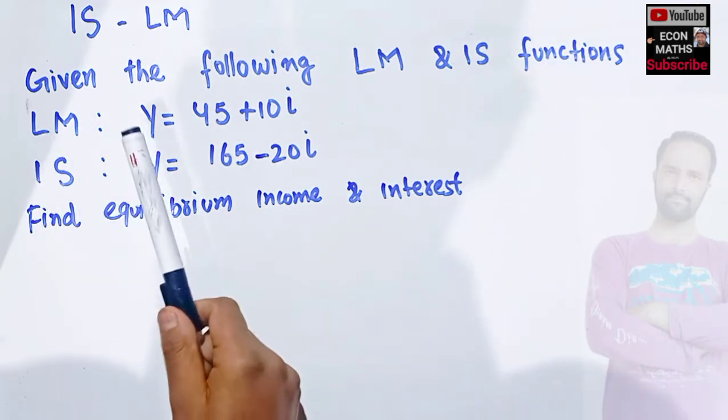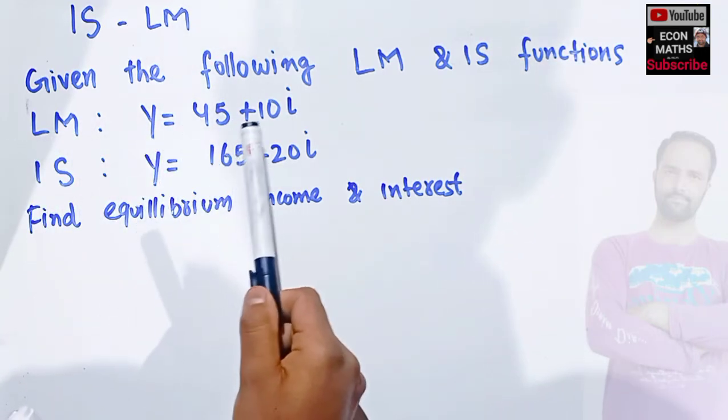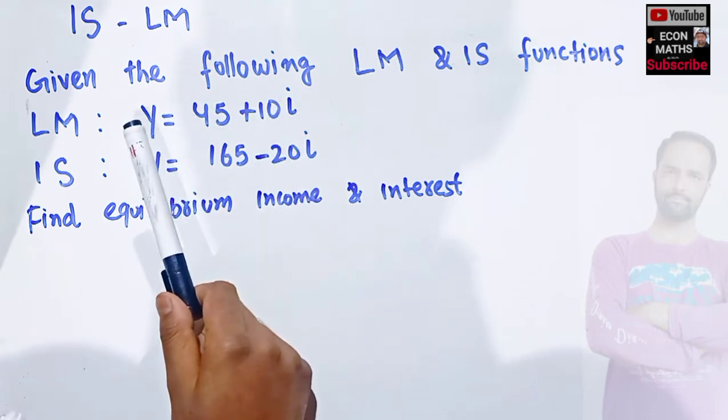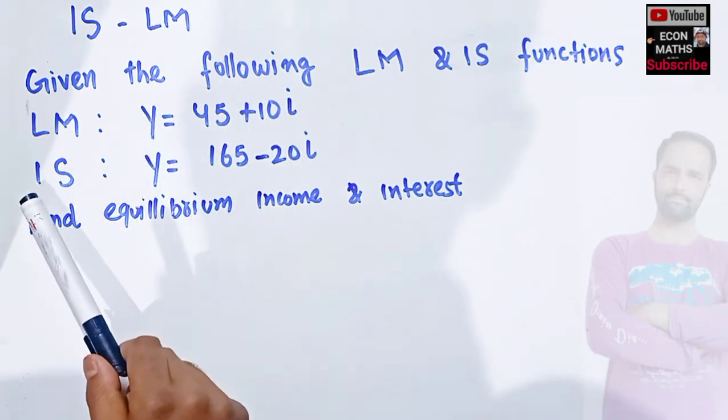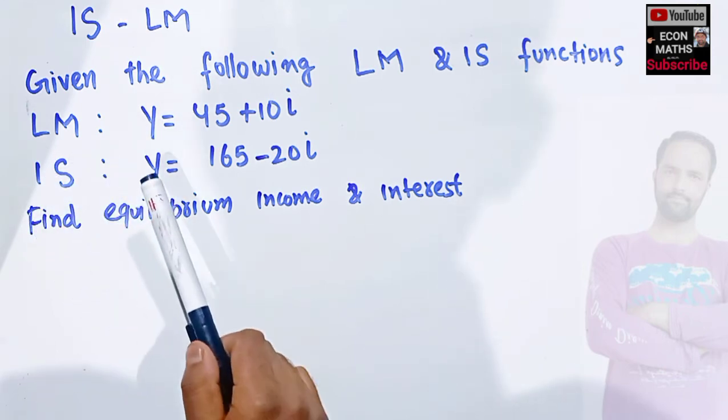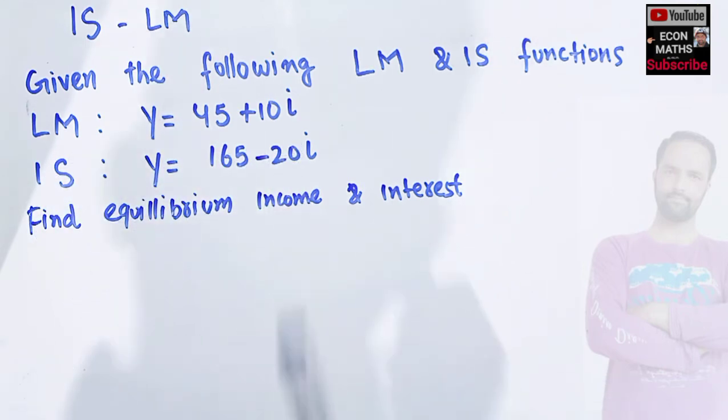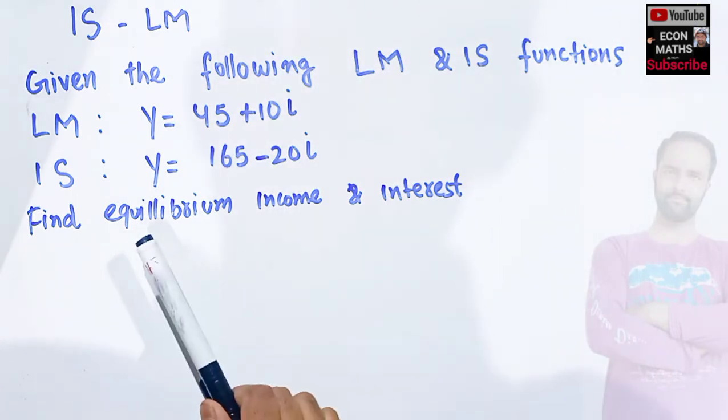LM function is given as Y = 45 + 10i, where Y is the level of income and i denotes the rate of interest. The investment-savings function, that is IS function, is given as Y = 165 - 20i. We need to find the equilibrium level of income and interest.